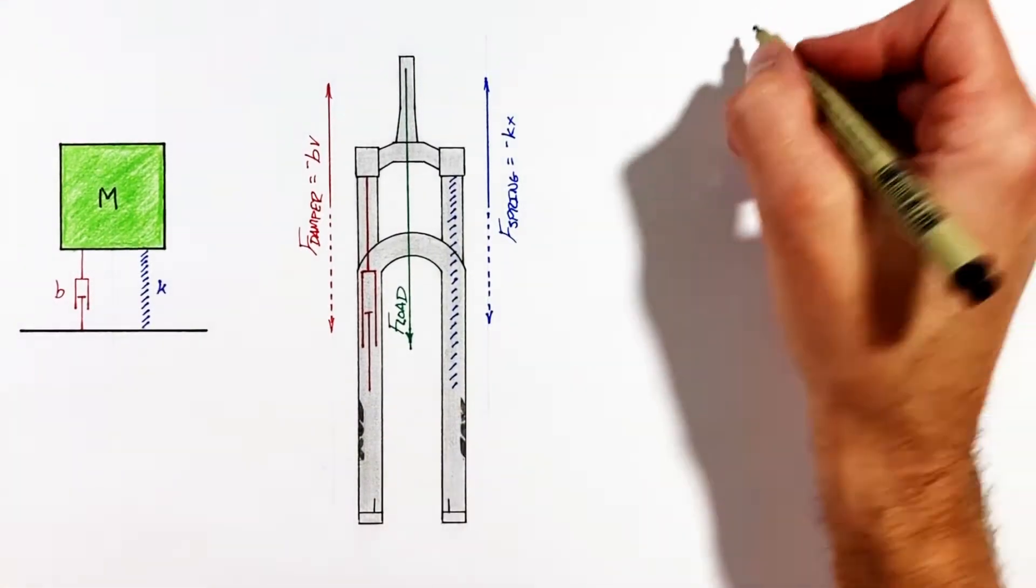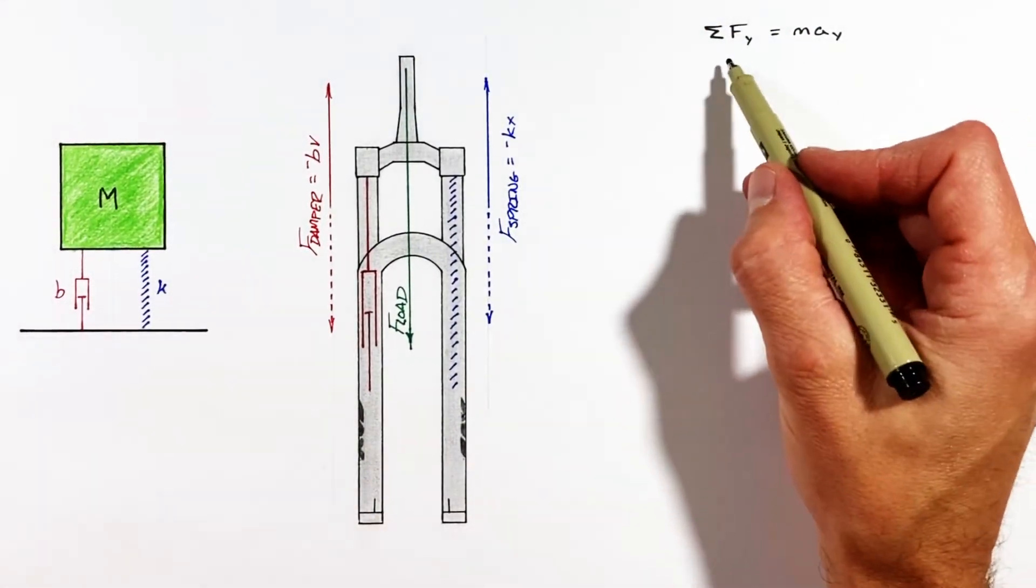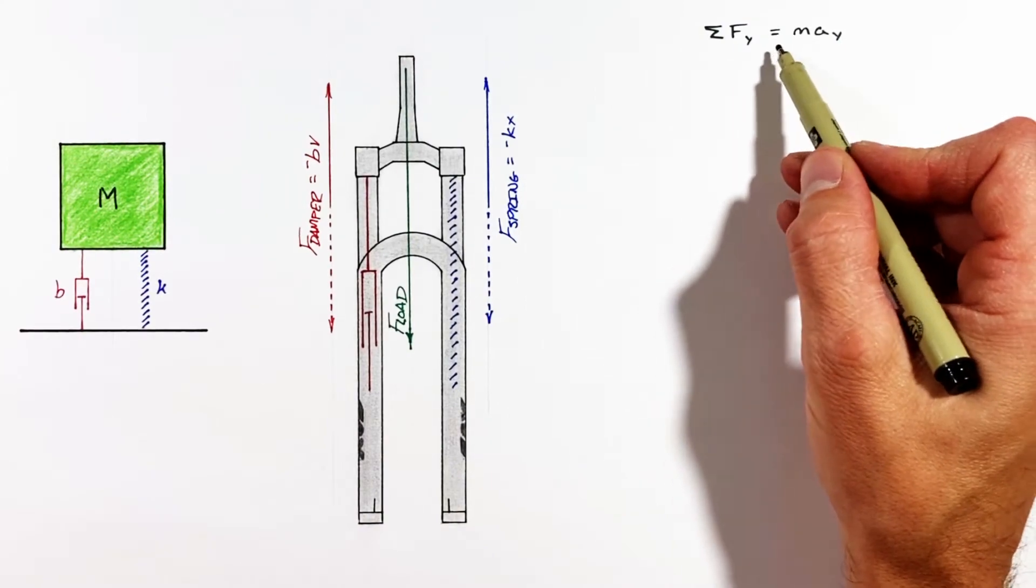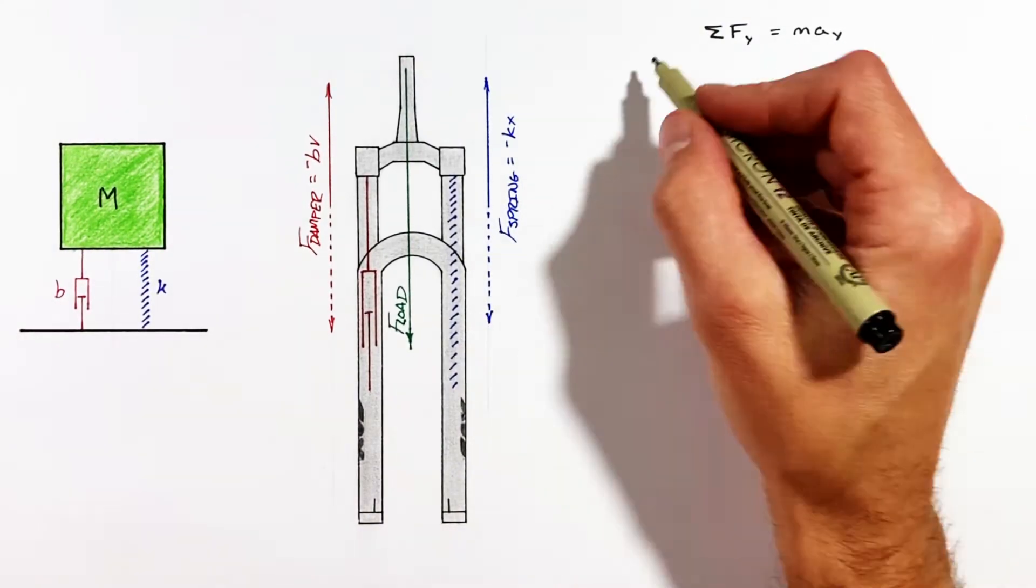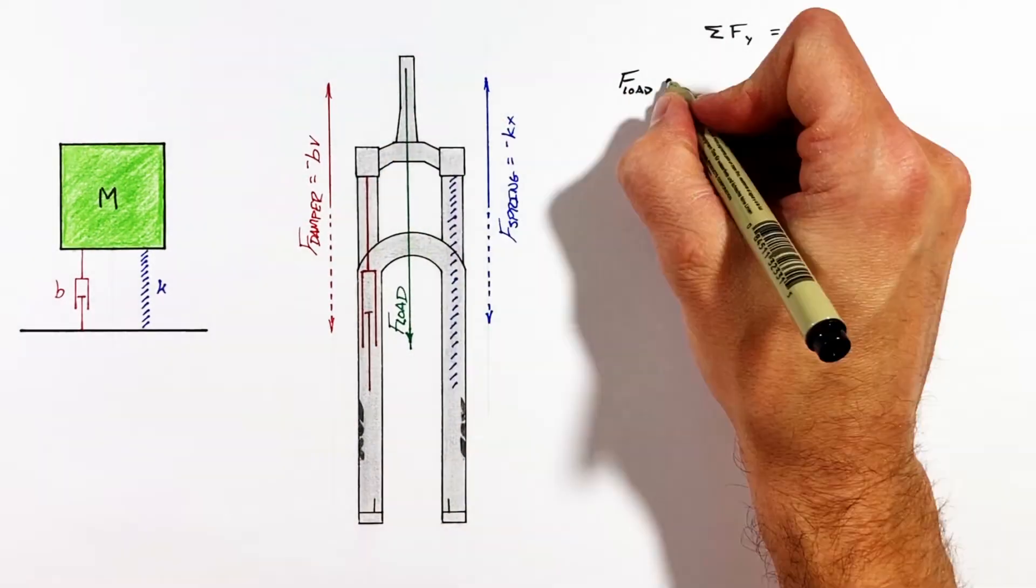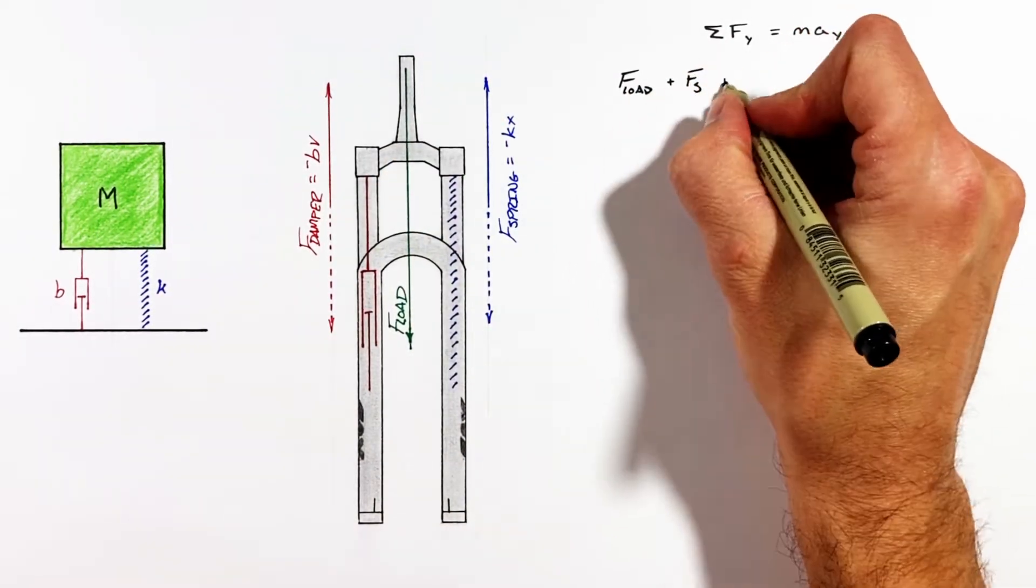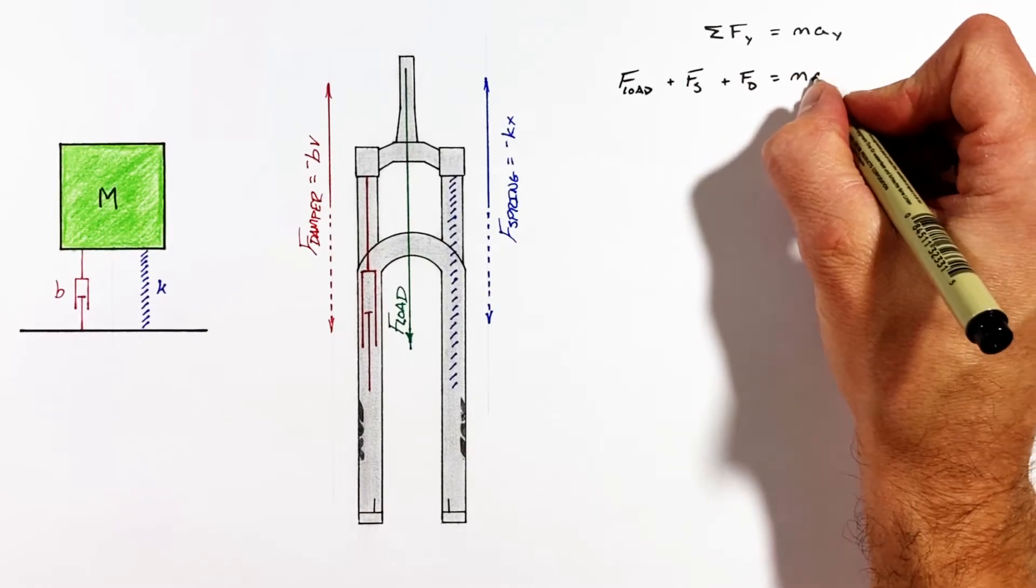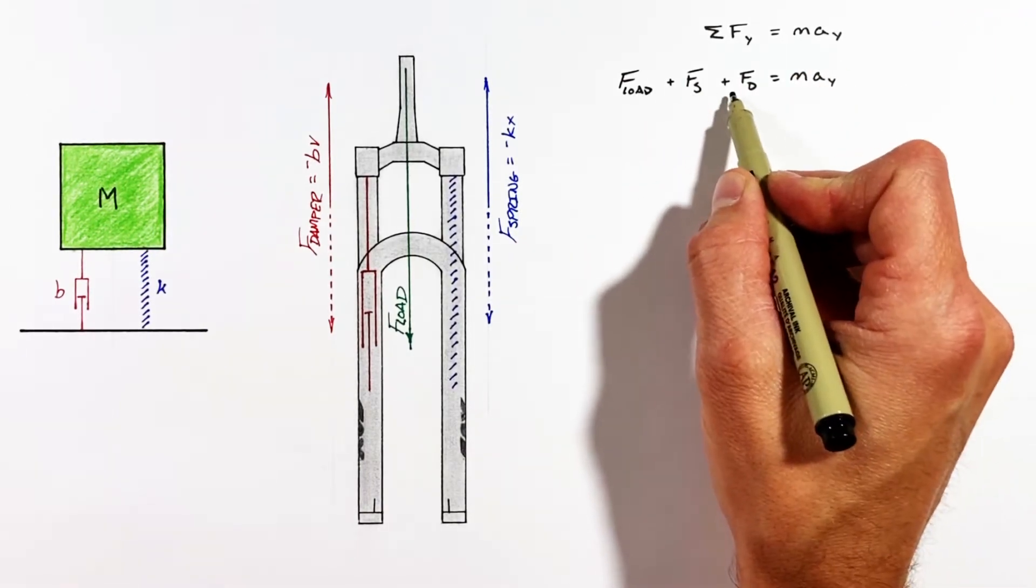So all we're doing is relating the forces in the problem to the motion of the mass, starting with the load which in this case is the force by gravity, then there's the force by the spring and the force by the damper. Next let's expand out each of these terms.